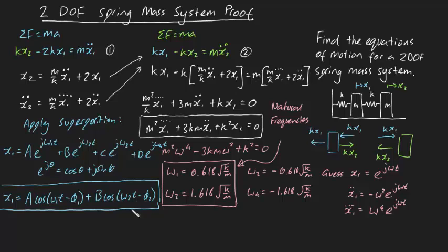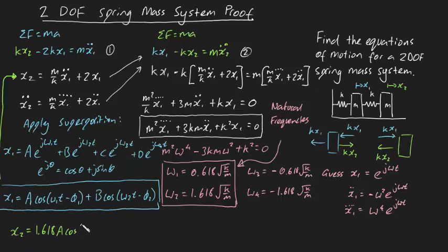Now that we've got the expression for x1, a quick and easy way to find x2 is to use the expression we already have with x2 isolated. Plugging our x1 back into that equation, you can show that x2 equals 1.618 times a cos(ω₁t − φ₁) minus 0.618 times b cos(ω₂t − φ₂), where a and b are the same constants as in x1.